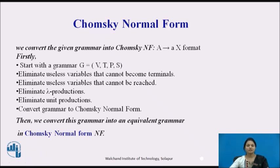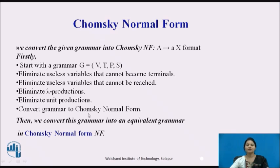The steps are: first, eliminating useless variables that cannot become terminals; then eliminate useless variables that cannot be reached; then elimination of null production; elimination of unit production; and then conversion of the grammar to Chomsky normal form.